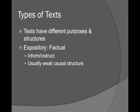Texts have different purposes and structures. Expository texts are factual — like newspaper articles and scientific readings — and their purpose is to inform or instruct. They usually have a very weak causal structure. Causal structure is the 'A comes first, B comes second, therefore A caused B' sort of structure. The problem with expository text is that causal structure is so important for comprehension and interestingness, so you tend to be bored because it's just a list of facts. That's why your textbook can put you to sleep — it is an expository text.